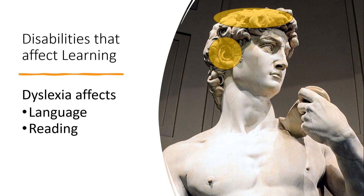Dyslexia is a learning disability that affects language, particularly reading. It was commonly misunderstood to mean a condition that causes letters to appear backwards and upside down, but in reality it is much more complicated. Dyslexia involves problems in identifying speech sounds and being able to relate the sounds to letters and words.